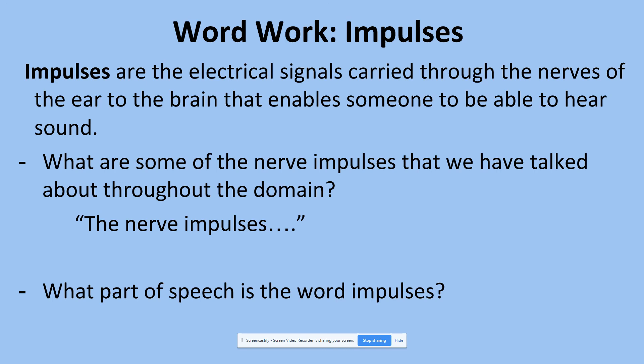If I'm thinking about an impulse, this is a little tricky because we think of an impulse as something that's happening or being done. But actually, the individual impulses themselves are nouns. That is all for Lesson 8, and we will pick up with our final read aloud in Lesson 9 later. Have a good day.